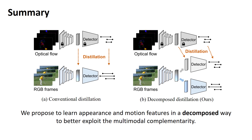In contrast, our framework first decomposes the motion and appearance features and then learns them separately, which will be combined for final prediction in the end. In this way, we can better exploit multimodal complementarity, significantly improving the RGB-based model.